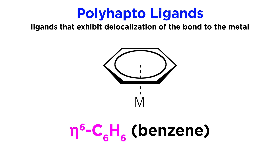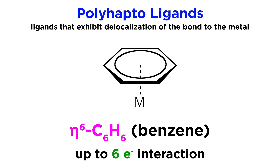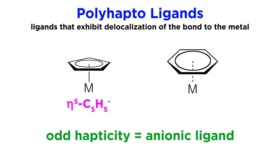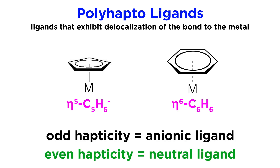Finally, benzene is also a very common ligand, which will donate up to three pairs of electrons, or six electrons total, just like the cyclopentadienyl anion, though benzene will be neutral. We can also see this written as eta6-C6H6. In general, when the eta value is odd, it usually indicates an anionic ligand, and when it is even it usually indicates a neutral ligand.